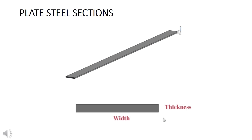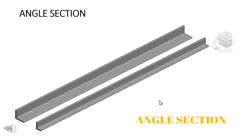For the plate section, there is a length portion and a width portion. We need to specify the plate's length, width, and thickness. Let's move on to the rolled angle section.